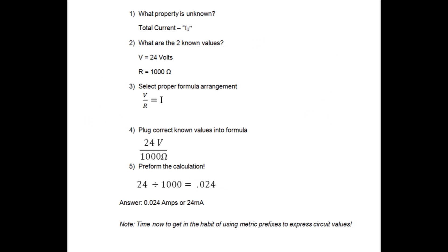So using our five-step process, we will work through this problem. Number one, what property is unknown? That's total current or IT. And remember, I stands for current or intensity of current. Number two, what are the two known values?